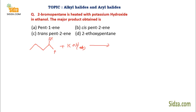Since there are two beta positions here, in the elimination reaction we always follow Zaitsev's rule — the more substituted alkene is more stable and will always be the major product. Hydroxide takes a proton from this beta position and you get an alkene. Between cis and trans, trans is always more stable than cis, so the trans product is the major product — option C.